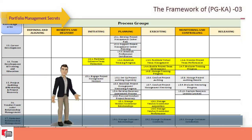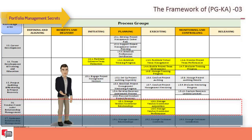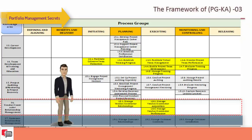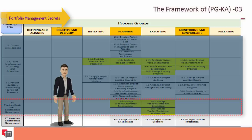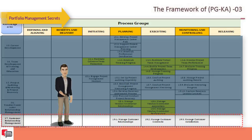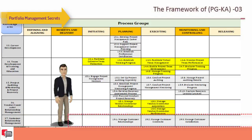Knowledge area sixteen is vendor-contractor relationship management, with three processes: manage vendor-contractor relationships, manage vendor-contractor acquisition, and manage vendor-contract performance. Knowledge area seventeen is customer relationship management, with three processes: manage customer relationships, manage customer contracts, and manage customer satisfaction.